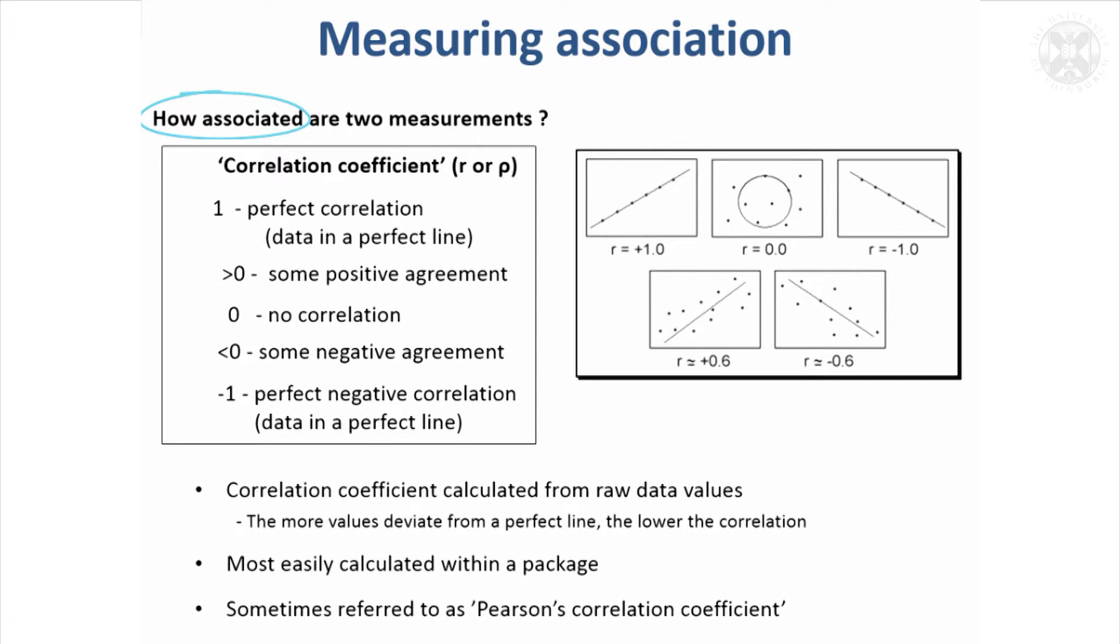If we first of all think about measuring the association, there's something called the correlation coefficient that conventionally gets used. Just to give a feel for what this coefficient, what sort of numbers you might expect from it. If you imagine two measurements, one plotted on the y-axis, one plotted on the x-axis, if they fell in a line exactly like this, you could put a straight line through them. You would say they'd got a correlation of one, and this r is often used to denote the correlation coefficient.